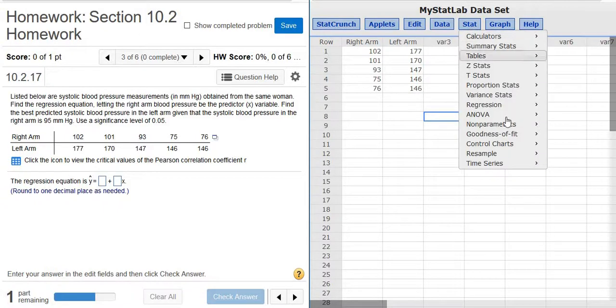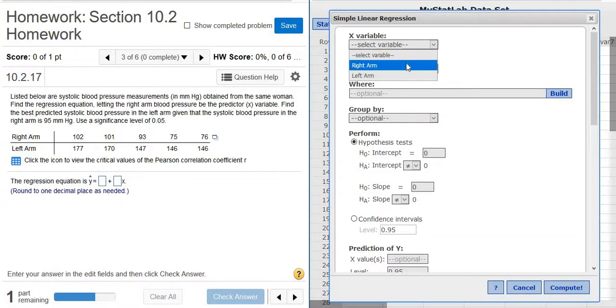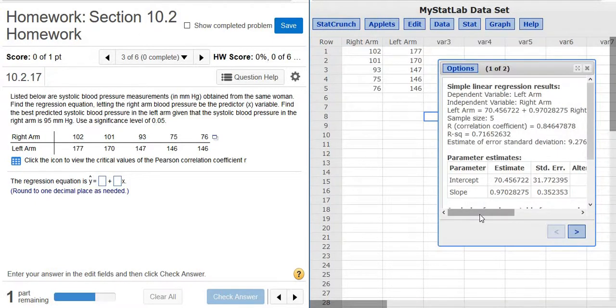Then you go to Stat, Regression, Simple Linear. You pick the X, so you pick the first thing, and then you pick the second thing. Then you click Compute, and there's the answers.